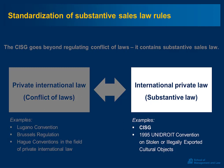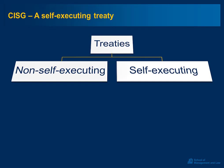So, uniform private law rules — substantive private law rules. Another distinction that is important in the context of the CISG is the distinction between two categories of treaties: non-self-executing treaties and self-executing treaties.